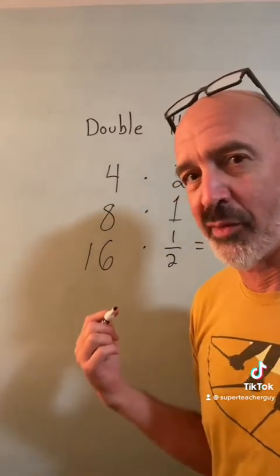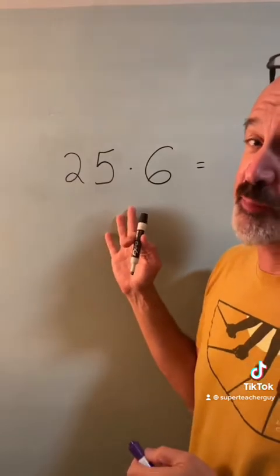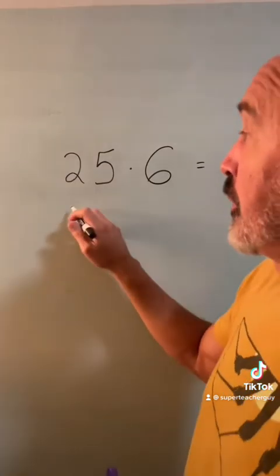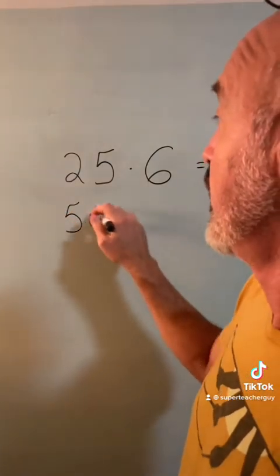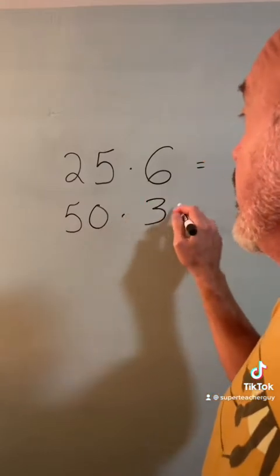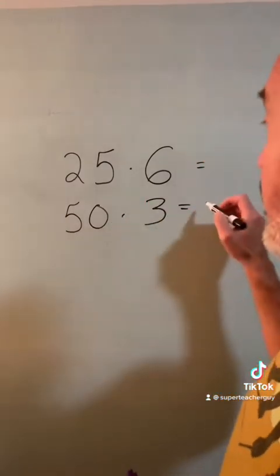But this seems like, why bother? If you can't figure out 25 times 6, you can double 25 and cut 6 in half, and maybe 50 times 3 is easier.